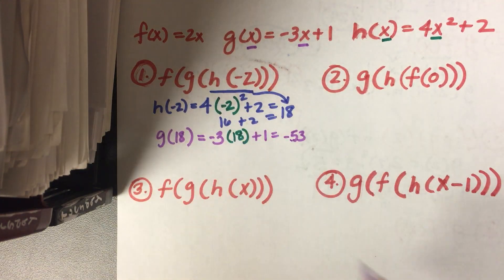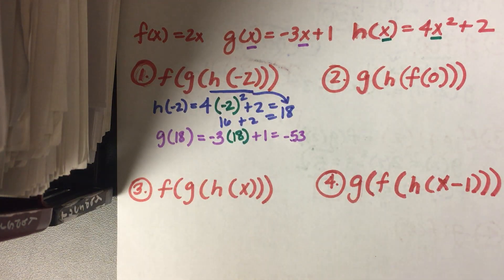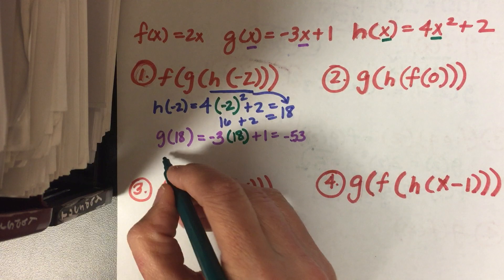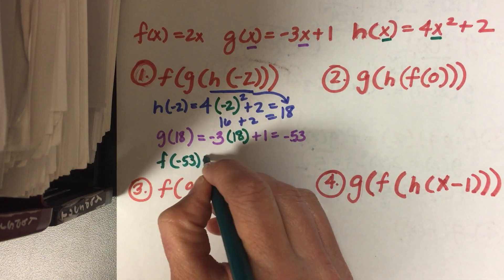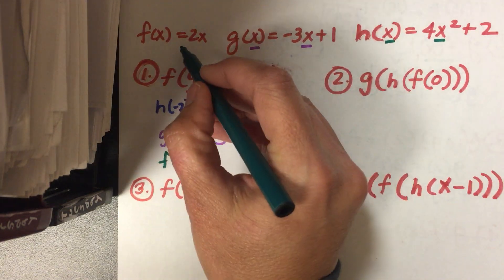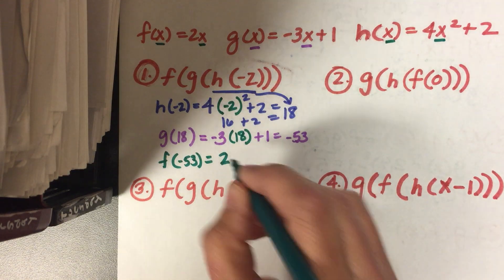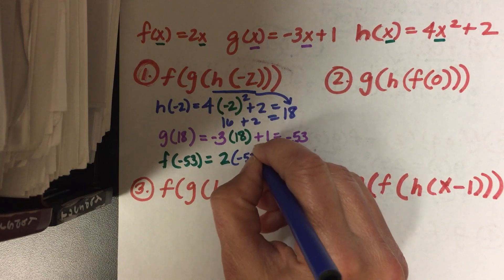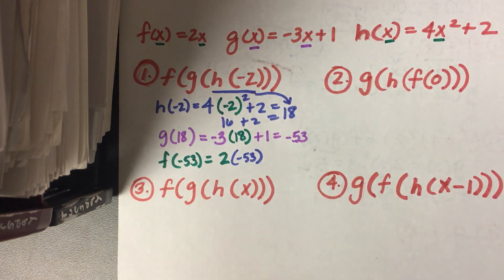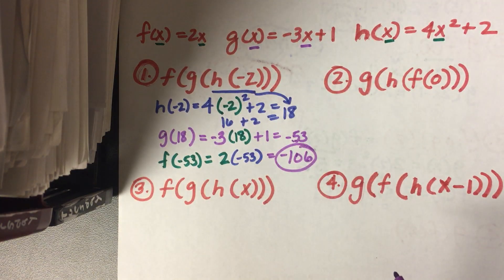So that's g of 18. Now, to finish it up, I'm going to go to the f function. My input is now negative 53. f of x equals 2x, so 2 times negative 53 is negative 106, and that is your final answer. It's the same process, except you do it 3 times instead of 2.